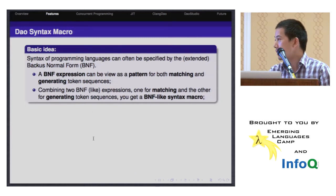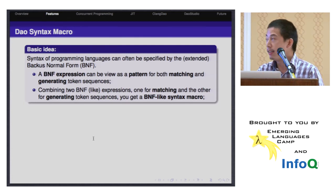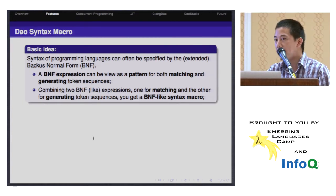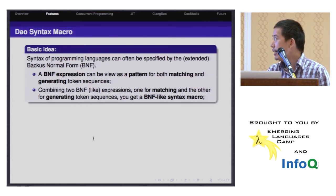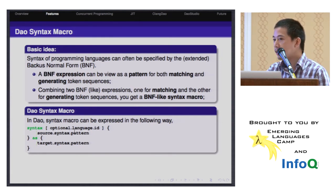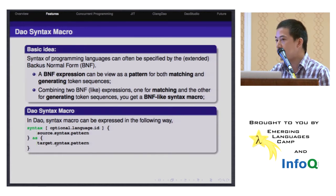The next feature I will introduce is the DAO syntax macro. DAO syntax macros are mostly based on the arc-storm form. A BNF expression can actually be viewed as a pattern for both matching and generating token sequences. So if you combine two BNF expressions, you can use one to match the source syntax and the other to generate tokens for the target syntax. Here's how the syntax looks for a syntax macro - you define the keyword, and you can optionally have a language ID which controls where this syntax can be applied. Here you express your source syntax pattern, and here you express the target syntax pattern.